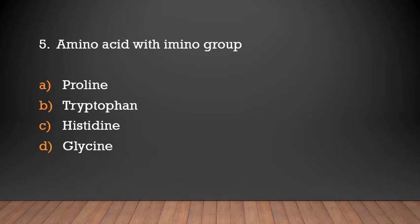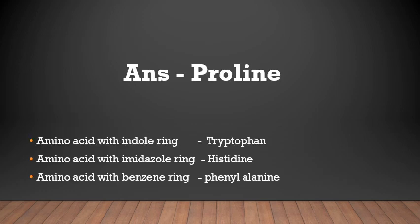Question: Amino acid with an imino group — proline, tryptophan, histidine, or glycine? Answer: Proline. Amino acid with an imidazole ring is present in histidine. Amino acid with a benzene ring is present in phenylalanine.